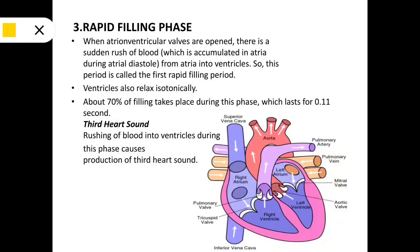The next phase is the rapid filling phase. When the atrioventricular valves are opened, there is a sudden rush of blood from the atria into the ventricles. The ventricles also relax isotonically.